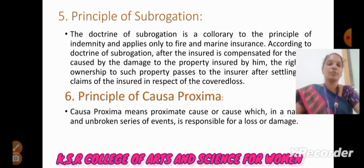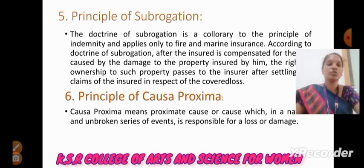Next, principle of subrogation: The doctrine of subrogation is a correlate to the principle of indemnity and applies only to fire and marine insurance. According to this principle, after the insured is compensated for the damage caused to the property insured by him, the rights of ownership to such property pass to the insurer after settling the claims of the insured.